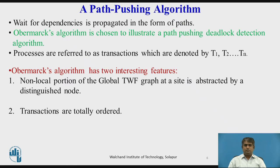Overmark's algorithm is chosen to illustrate a path pushing deadlock detection algorithm because it is implemented on the Distributed Database System R of IBM Corporation. Overmark's algorithm was designed for a distributed database system; therefore, processes are referred to as transactions, denoted by T1, T2 to TN.